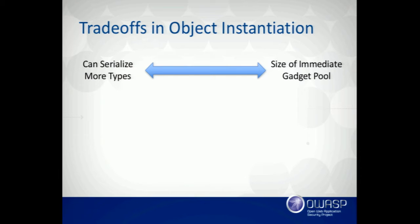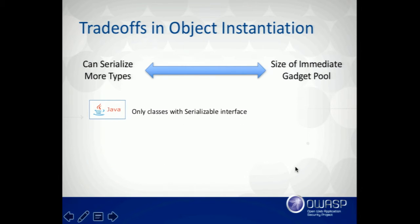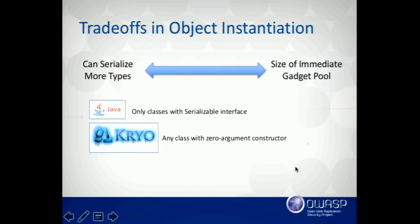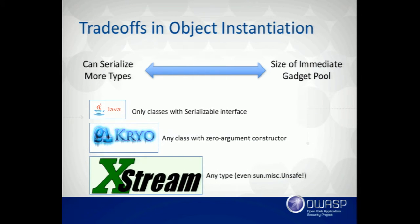The immediate gadget pool is the set of classes you can trick your victim into deserializing. To recap: Java allows only classes with the Serializable interface; Kryo allows any class with a zero-argument constructor; XStream allows any type — even sun.misc.Unsafe, the holy grail of Java hacking, which can play with direct memory and do all kinds of dangerous things. Even just being able to instantiate that class in your system is a serious trust boundary violation.